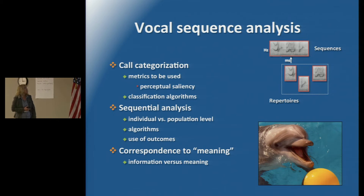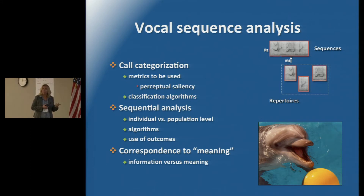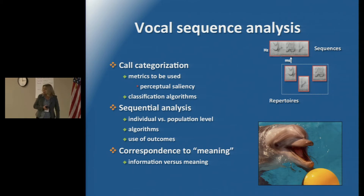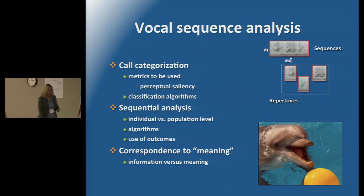There's going to be a lot of discussion about call categorization. That includes the metrics to be used, perceptual saliency to the animals themselves, and the kinds of classification algorithms we use to determine different groups. Sequential analysis itself includes not only looking at individual sequences, but also sequences at the population level — as well as developing the right kinds of algorithms, information theory being one very important one. We also need to consider how we map those sequences to behavioral context and meaning, and be clear about the distinction between information and meaning in the entropic sense.